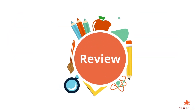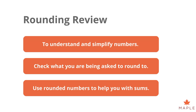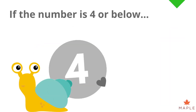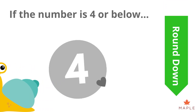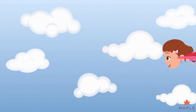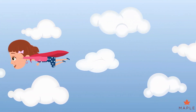Let's review the rules. We use rounded numbers to understand and simplify numbers. If the number is five or higher, go up. When rounding numbers below five, round down. Check if you are being asked to round to the nearest whole number, ten, hundred, thousand or even ten thousand. Use rounded numbers to help you with adding, subtracting and multiplication so you can get a rough estimate. You should now be a rapid rounder and be able to do lots of these questions on your own.